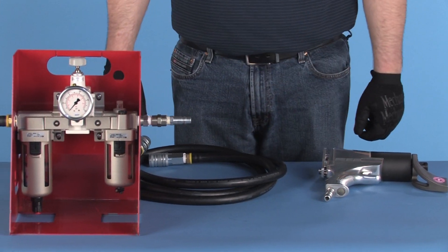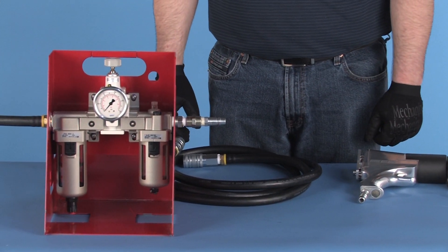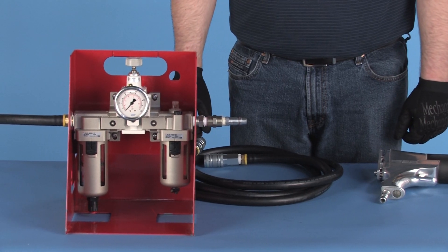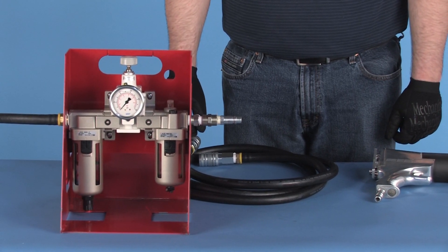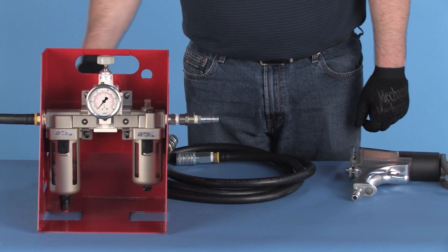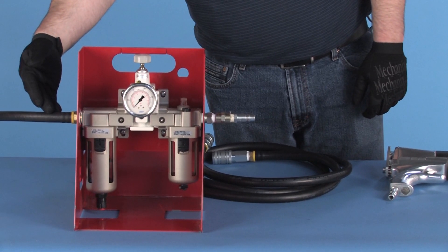Any defects must be corrected before pressurizing the system. For optimum performance, the J-GUN requires a clean, dry air supply of 30 cubic feet per minute at 90 psi.